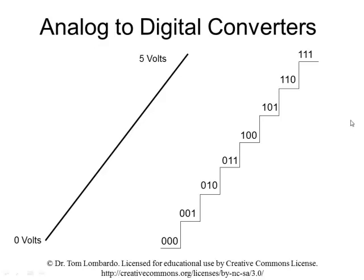Over here in this picture, on our left, we see an analog voltage, and you can see it goes smoothly from 0 to 5 volts. There are no discrete steps in there. If you ask a mathematician how many points are on that line segment, he'll tell you an infinite number. That's an analog quantity.